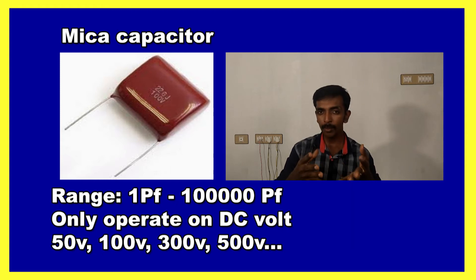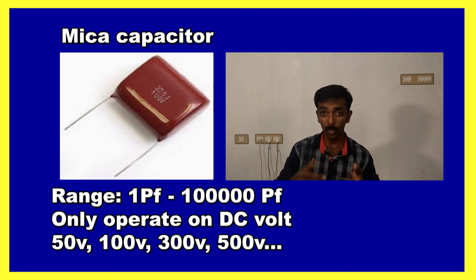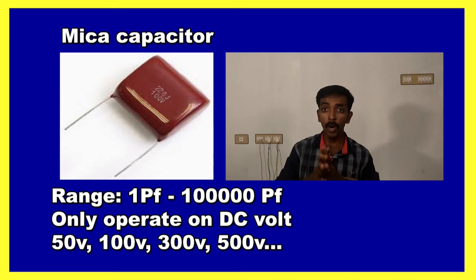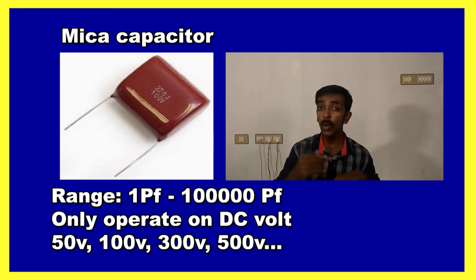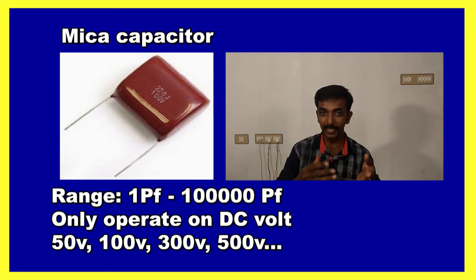Now about types of capacitors — capacitors are divided into two categories: electrolytic and non-electrolytic. Non-electrolytic types include ceramic capacitors and others. First, the mica capacitor — it is made of mica material, operates at 50V, 100V, or 200V DC, and ranges from 1 picofarad to 1 lakh picofarad.